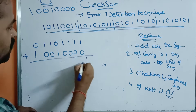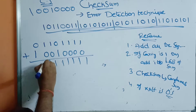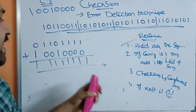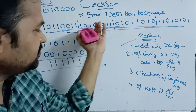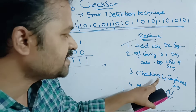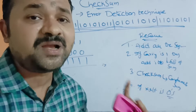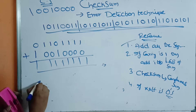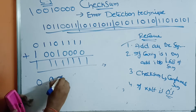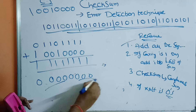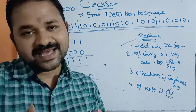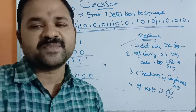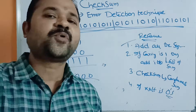We perform the addition and get all 1s. We complement this sum — all 1s are converted to all 0s — so we get 8 zeros. Since the result is all 0s, the receiver knows it is the correct message. There is no change in the message, so the receiver accepts it and provides an acknowledgement.